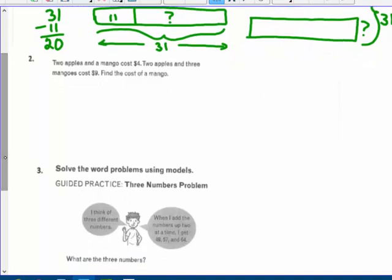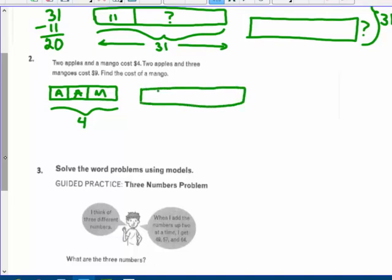Two apples and a mango cost $4. Two apples and three mangoes cost $9. Find the cost of a mango. Oh, two apples and a mango. So two apples and a mango. So AA and M I'm going to use all together. This is $4. But two apples and three mangoes. Well, that's going to be a longer one. So two apples and three mangoes. Oh, I need to make that a little bit longer.